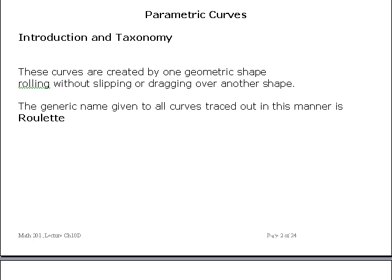They also can be generated physically by having one geometric shape roll over another. In this case, the rolling curve does not slip or drag, but instead just rolls smoothly over the other curve. In the moving curve, there's a pencil located somewhere along the shape, and this pencil traces out a curve. These are the parametric curves we're talking about. The generic name given to all curves traced out in this manner is the roulette.